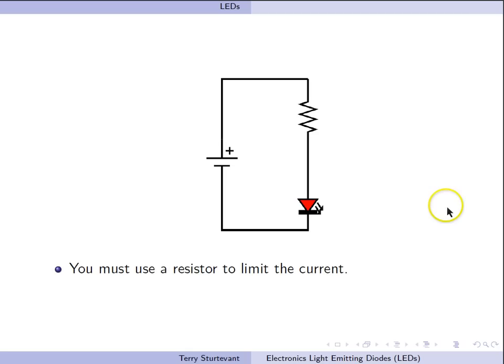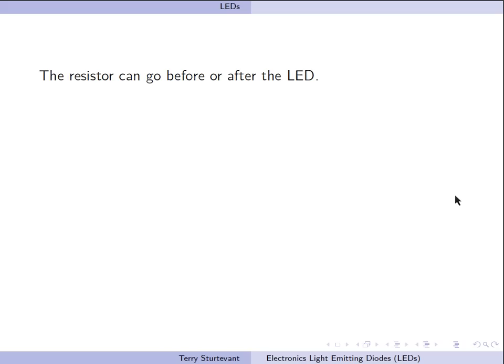In order to not blow up the LED, you need a resistor to limit the current. The resistor can go either before or after the LED. So here we show the LED first, the resistor following. Here we show the resistor first and the LED following.